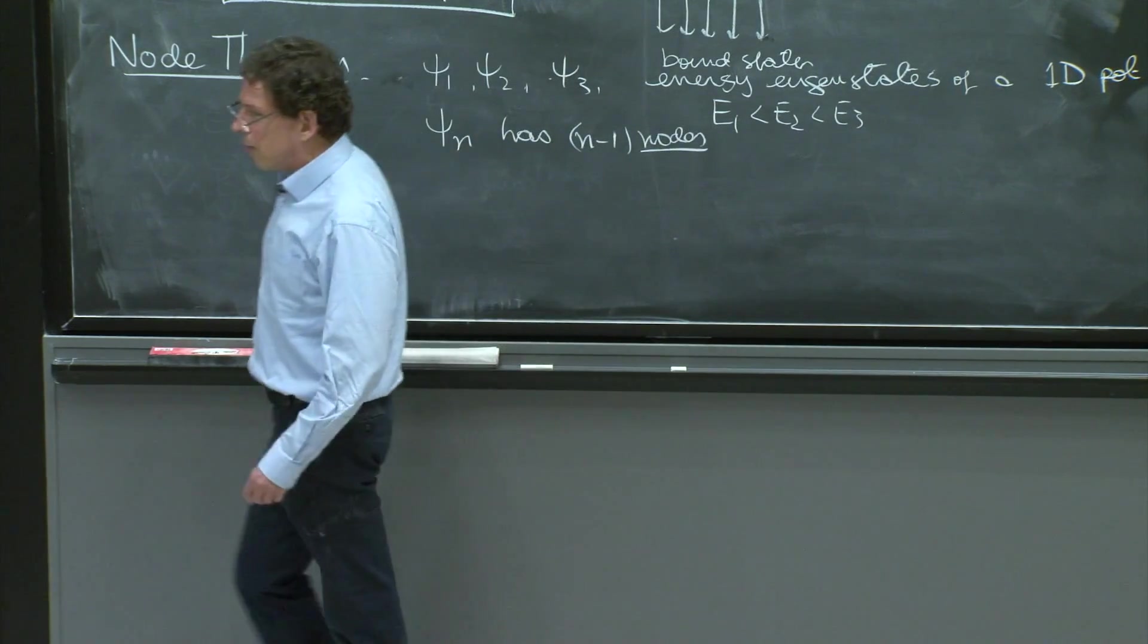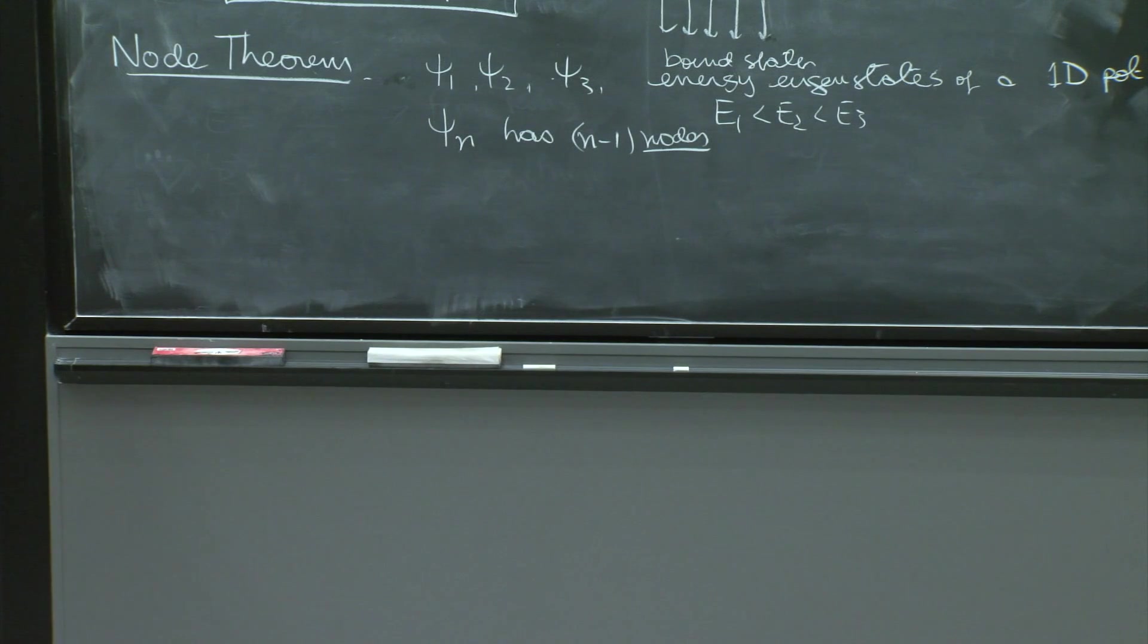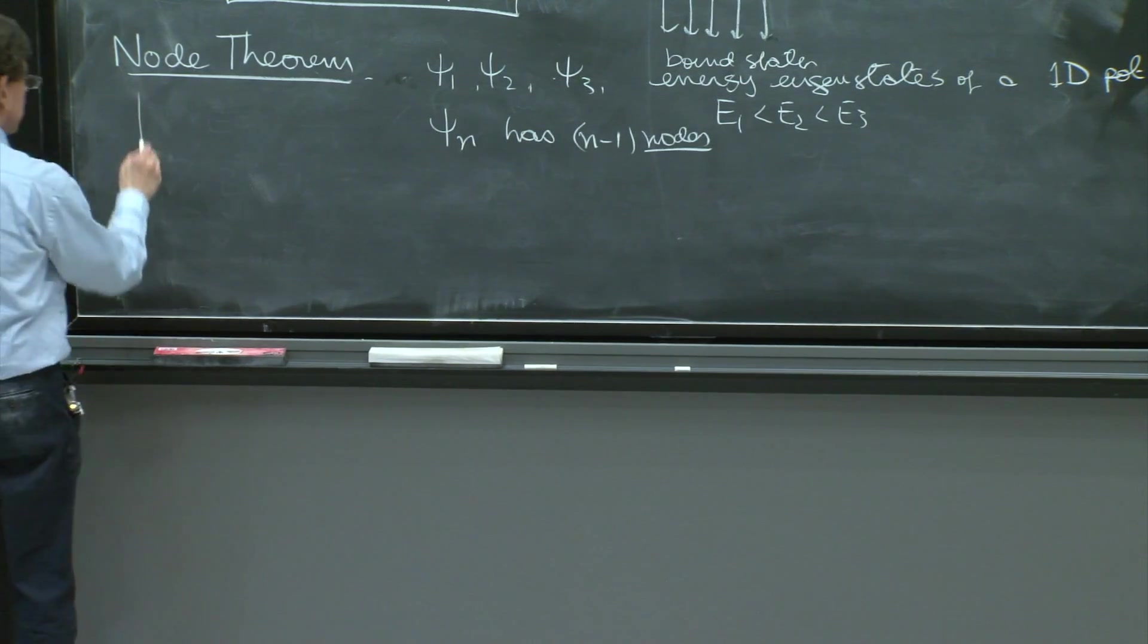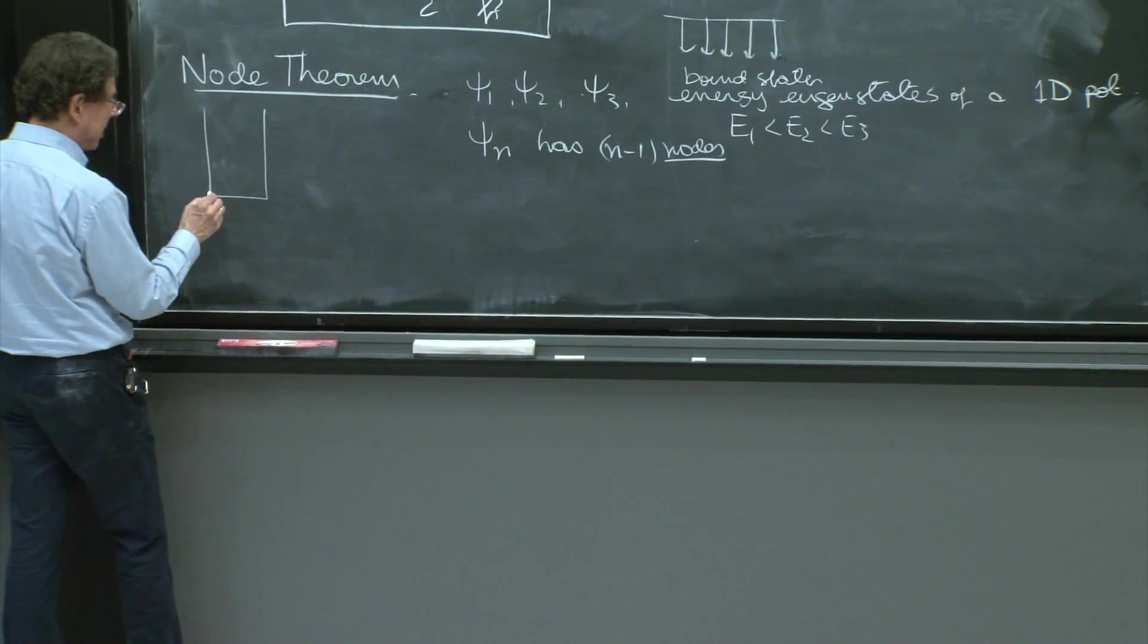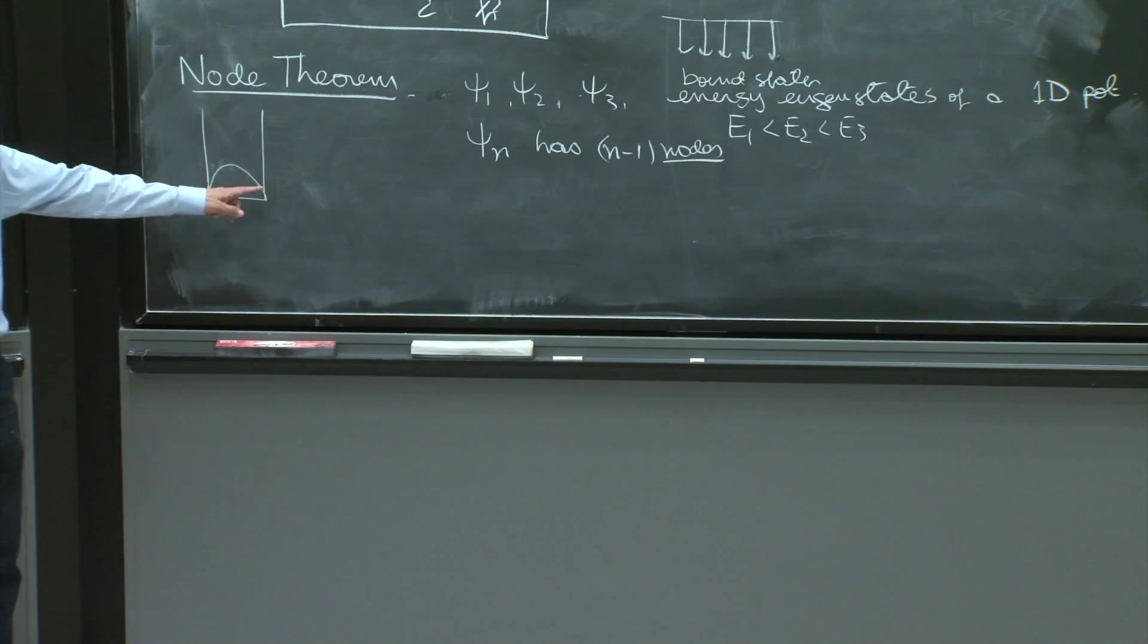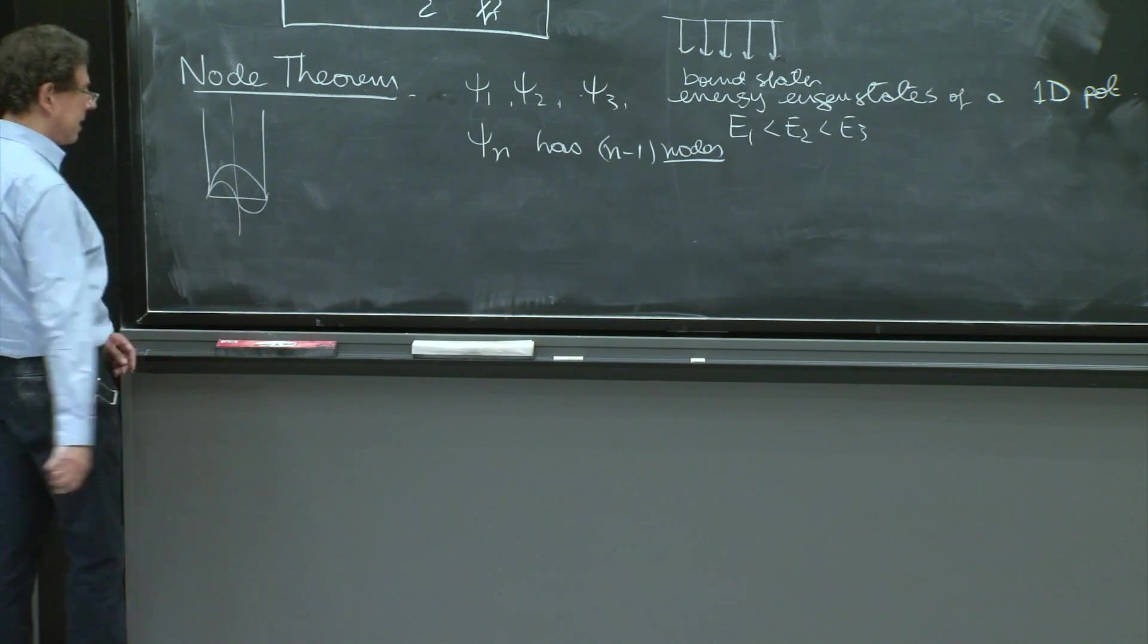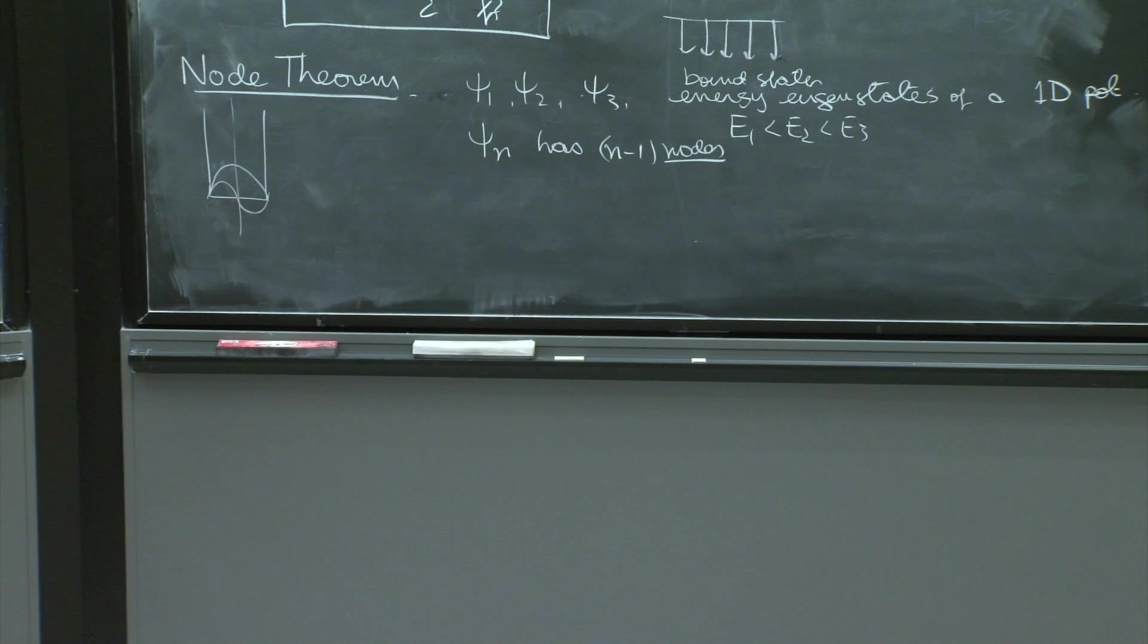Those are points where the wave function vanishes inside the range of x. So for the square well, you've proven this by calculating all the energy eigenstates. The first state is the ground state, has no nodes. The next state is the first excited state, has one node. And we saw that each one has one more node than the next.